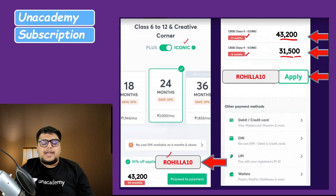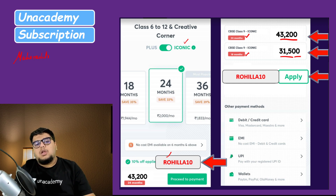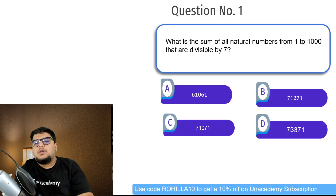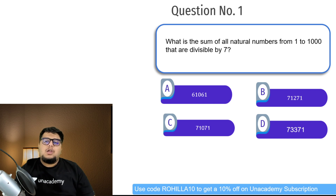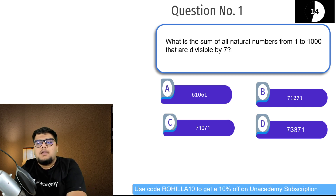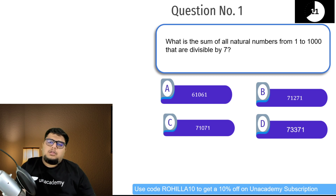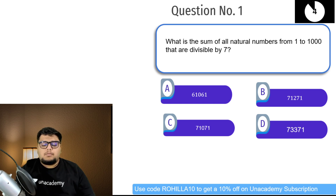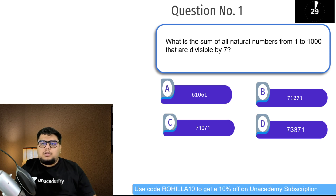तो आज हमारा target है Maharashtra के questions discuss करने का। शुरू करते हैं question number 1 से। Question says: what is the sum of all natural numbers from 1 to 1000 that are divisible by 7? 1 से 1000 तक कितने numbers हैं जो 7 से divisible हैं — क्या answer होना चाहिए?